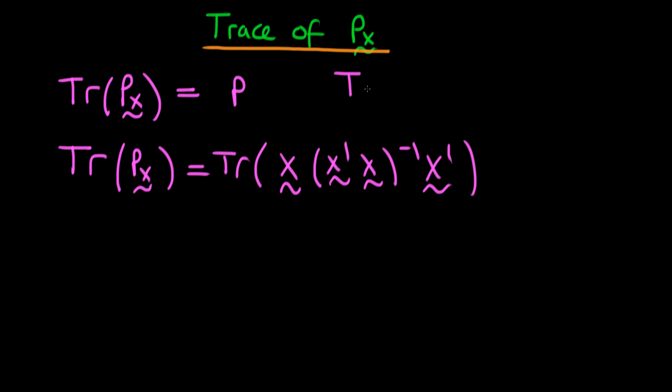And it turns out that the trace operator is actually invariant under cyclic permutations. So, in other words, the trace of ABC is equivalent to the trace of CAB, for example. So, as long as you permute things cyclically, the trace operation doesn't change.